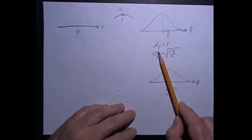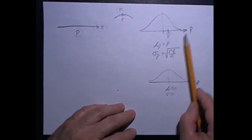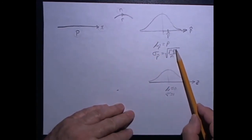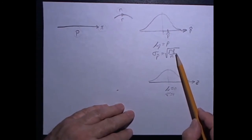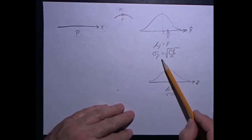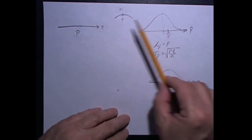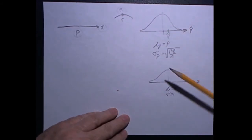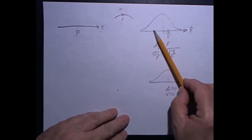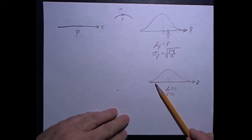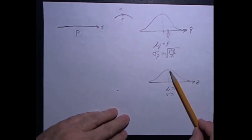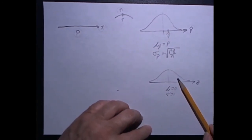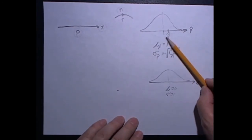Furthermore, the standard deviation of all those sample proportions will be the square root of p times q — where q is the probability of failure, 1 minus p — divided by n. There's a strong connection between this sampling distribution and the z-distribution, because we can convert all the values to their z-scores, so this distribution would be measured in standard deviations instead of the original units.